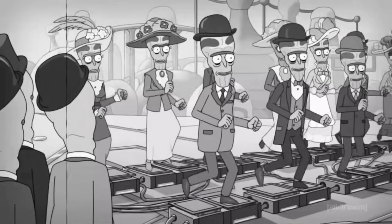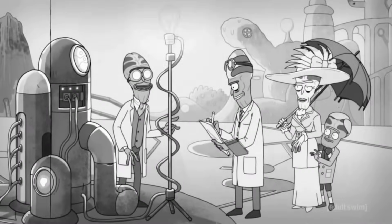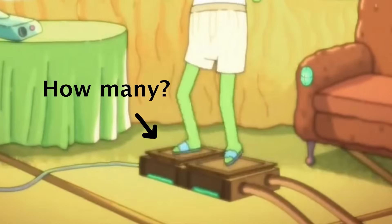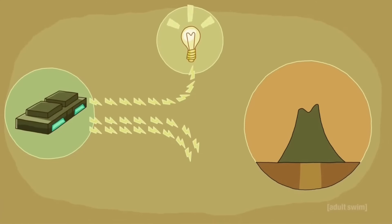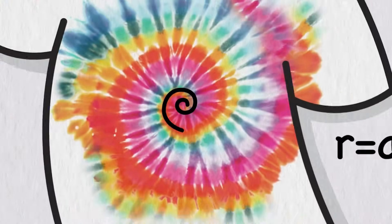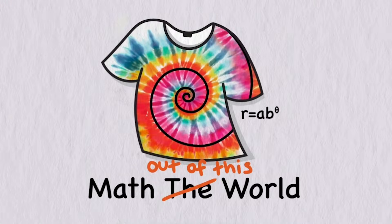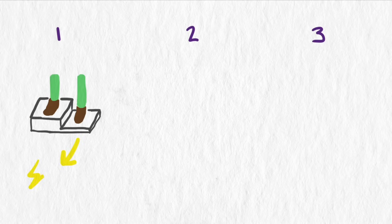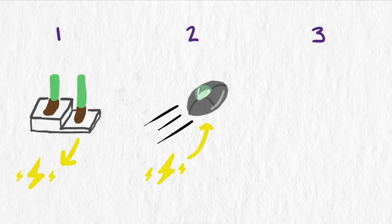Now, what if we entered this world of cartoon semi-logic and asked the question: how many aliens would the scientist need stepping on these generators to power his ship? We'll do the calculations in three parts. First, we ask how much energy one step creates. Next, we ask how much energy the ship needs to operate. And finally, we put the two together to find how many aliens are needed to generate the power the ship demands.